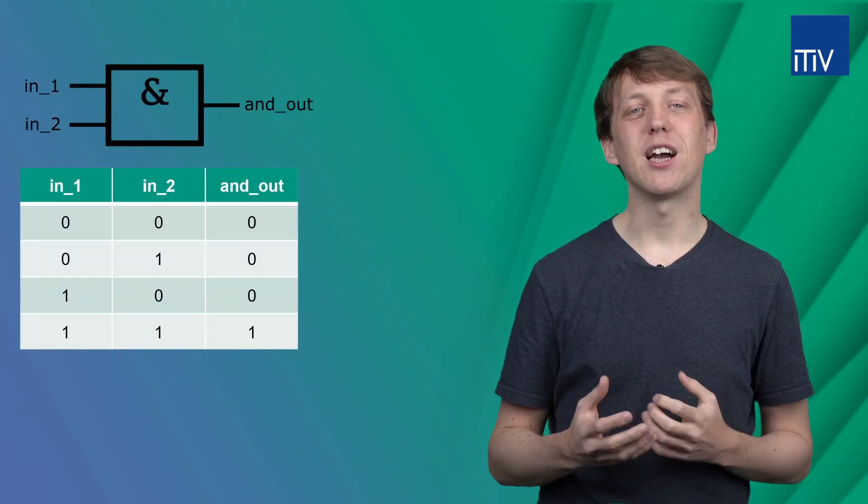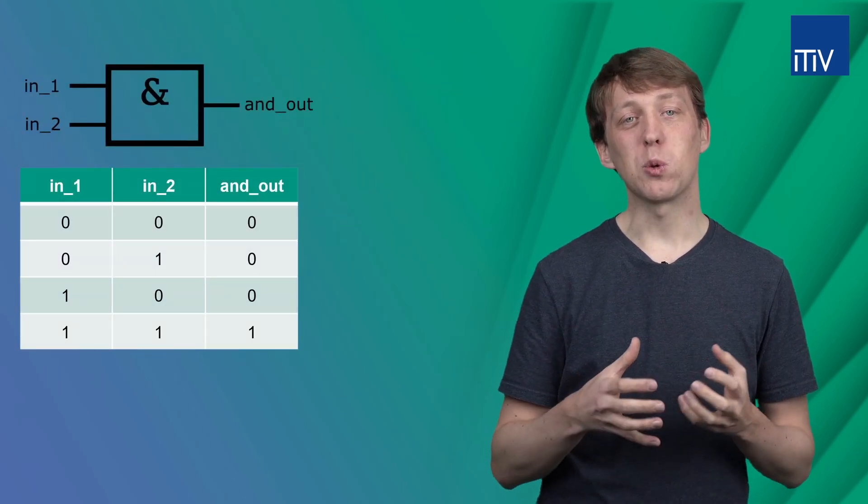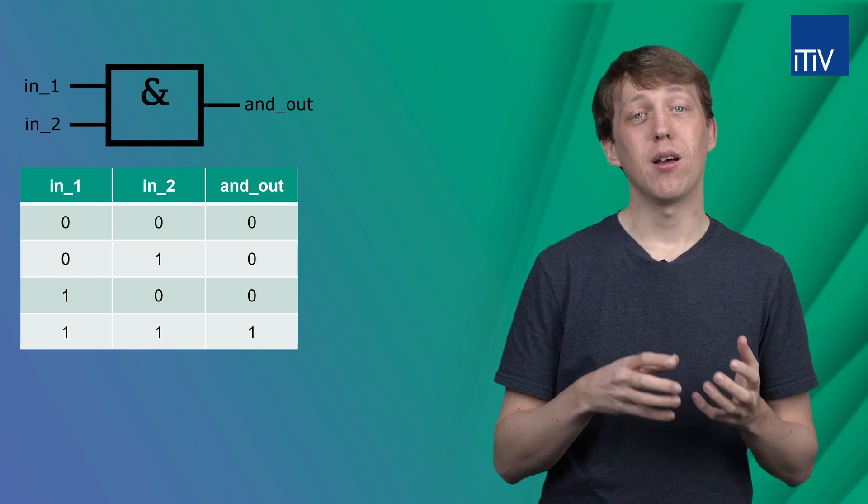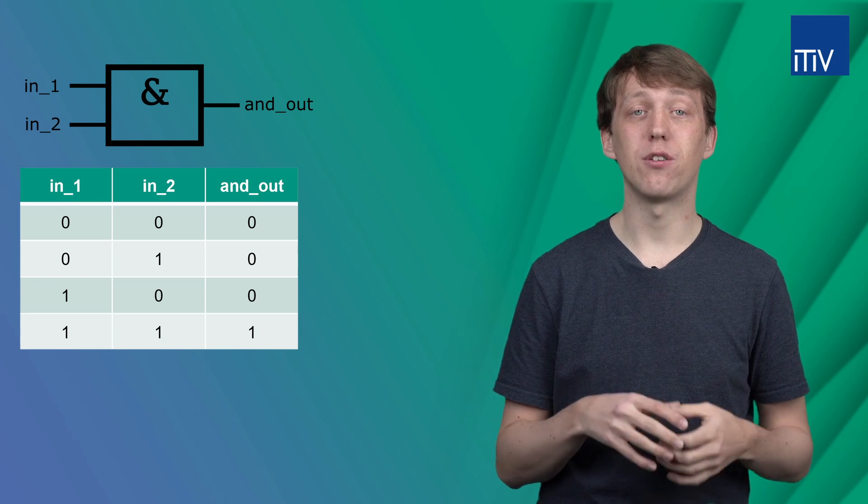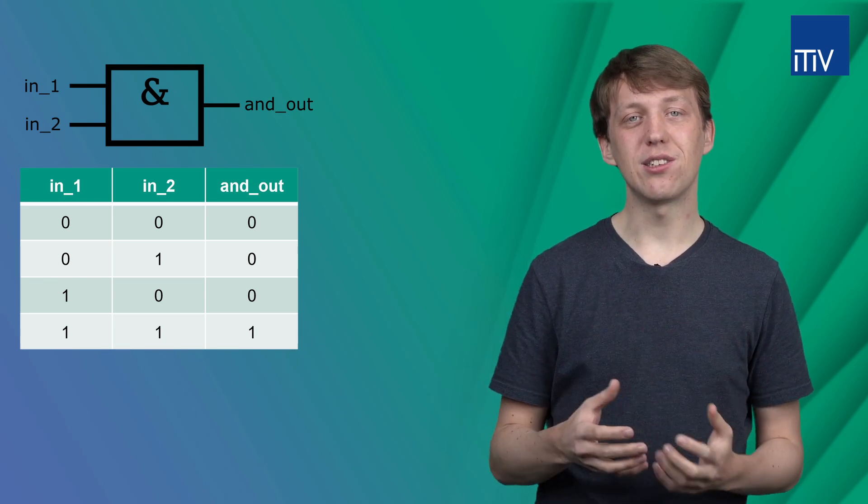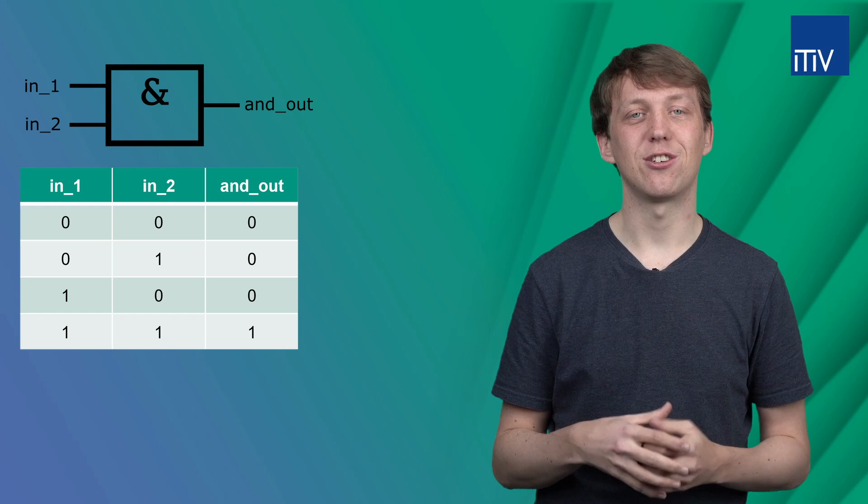Now we have some kind of black box. We know the interface of the design but there is no definition of the behavior or the internal structure of our model. This is done within the architecture definition.